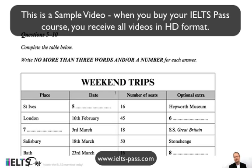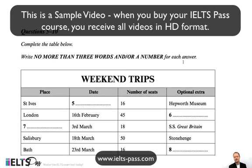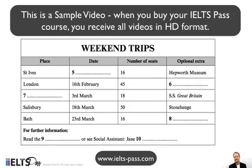Questions 5 to 10 of section 1 — the second part — feature a table. Quickly have a look at the instructions: it says write no more than 3 words and/or a number for each answer. This part is about weekend trips. You have place, date, number of seats, and optional extra. Questions 5 to 10 are spread out in the table, so you would be listening for a date, the optional extra, the place, optional extra again, and then further information to fill in the blanks in questions 9 and 10.